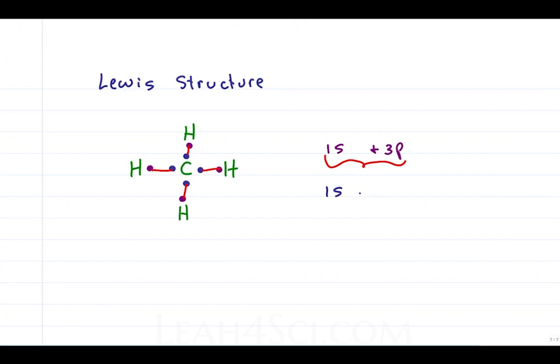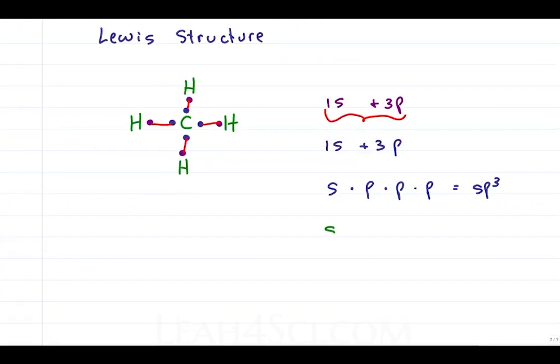If I mix 1s plus 3p, giving me s times p times p times p, for sp to the third or sp3. If I mix just 1s and 2p, I get sp2, allowing for double bonds or carbocations. And if I mix just s and p to get an sp orbital, I now have room for a triple bond or two double bonds.